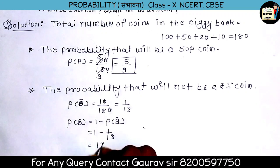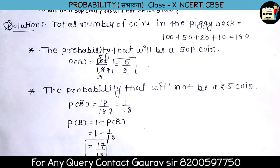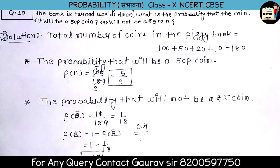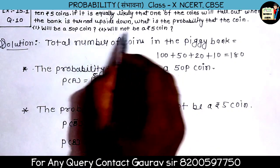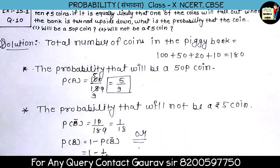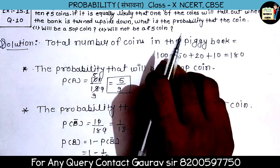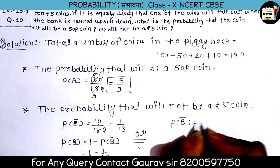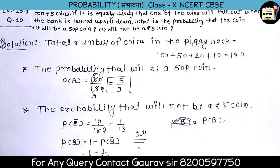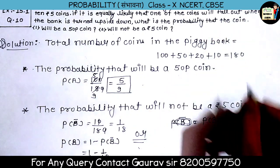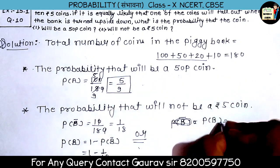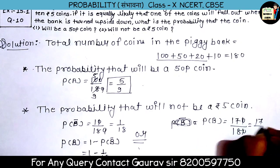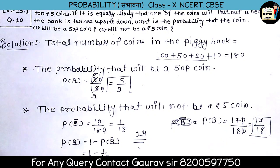18 minus 1 gives 17 upon 18. Or using the easy direct method: if 5-rupee coins are not wanted, remaining coins are 100 + 50 + 20 = 170. So P(V) = 170 upon 180, cancel to get 17 upon 18. Both methods give the same answer: 17 upon 18.